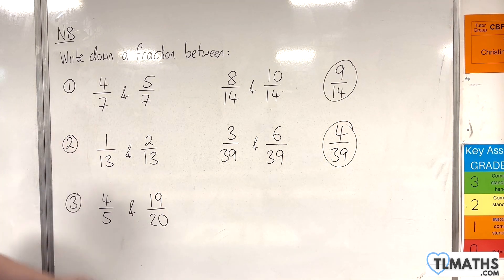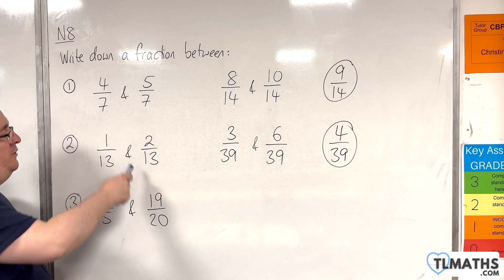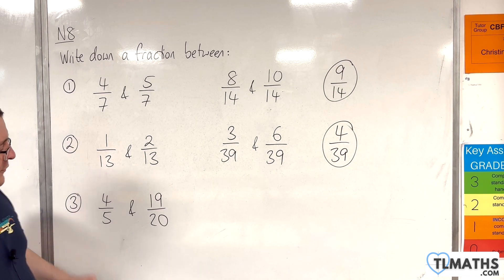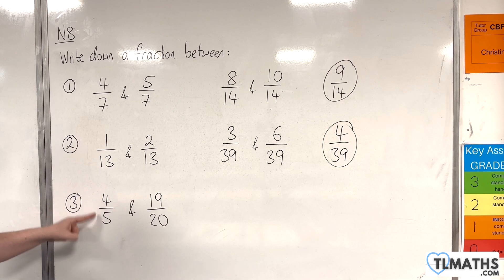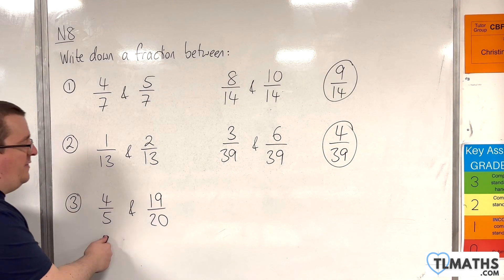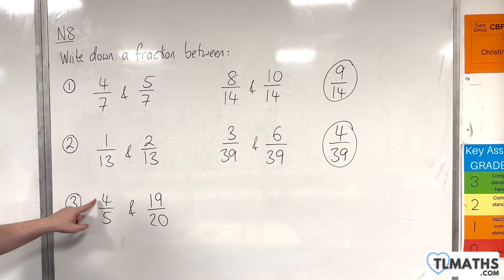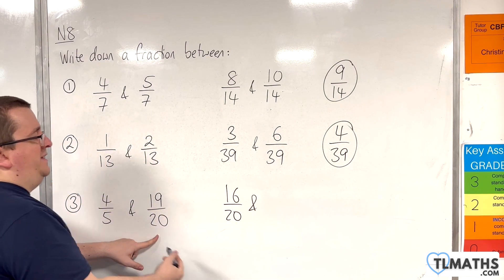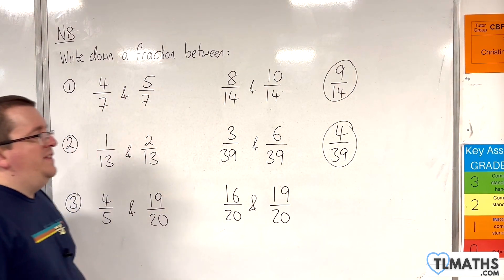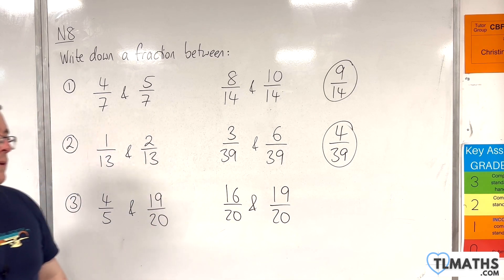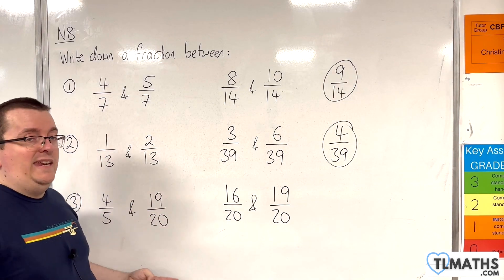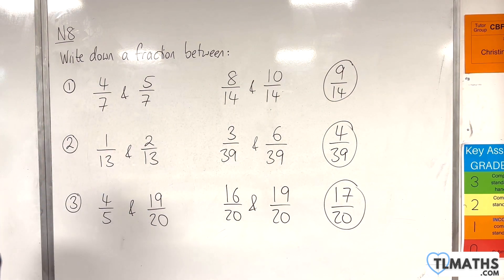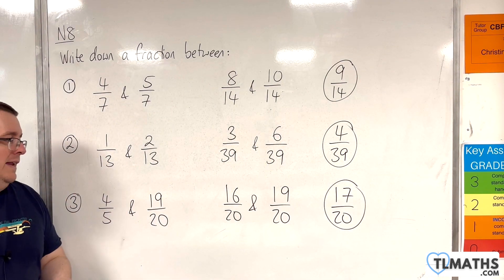Let's take a look at question number 3. Because in these two examples, both the denominators have been the same, but in this case they're not. We have 4 fifths and 19 over 20. Thankfully, 4 fifths — we can multiply top and bottom by 4 to get the denominators the same. So, 4 fifths, if I multiply top and bottom by 4, I'm going to get 16 over 20. And my other fraction is 19 over 20. Now I just need a fraction that is somewhere between those two, which would be 17 over 20 or 18 over 20. So, 17 over 20 is a fraction that is somewhere between 4 fifths and 19 over 20.